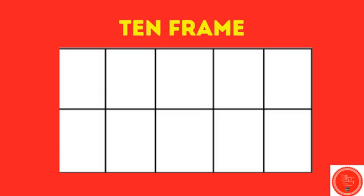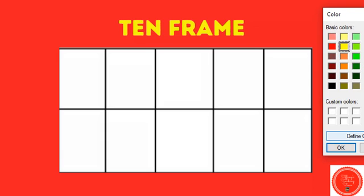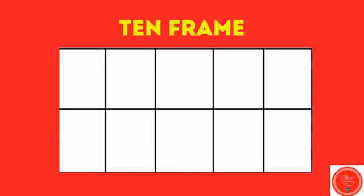Let's take a look at this. This is a 10-frame. It's called a 10-frame because it has 10 boxes. To show the number one in a 10-frame, we're going to make one circle to fill in one box. So this 10-frame represents the number one.